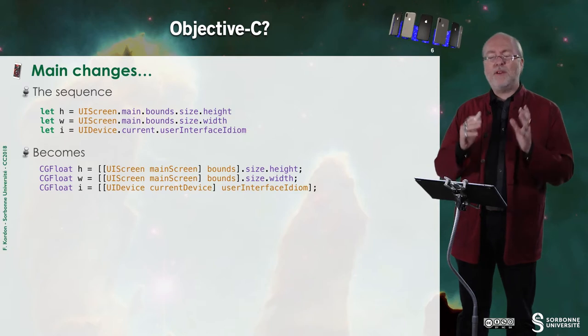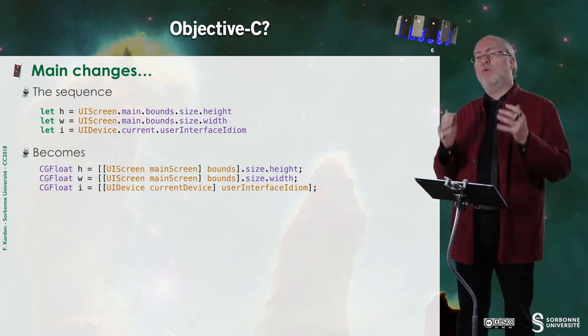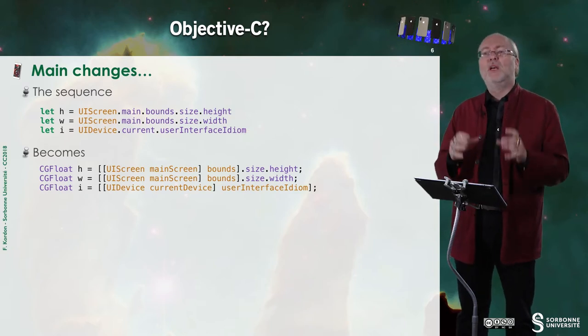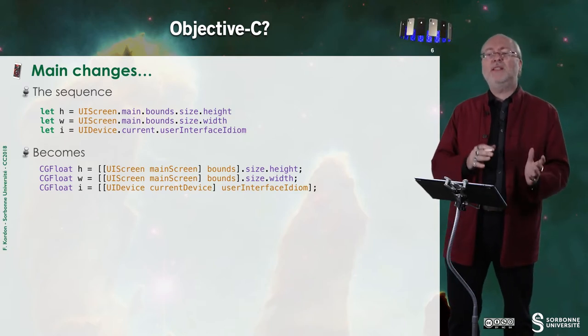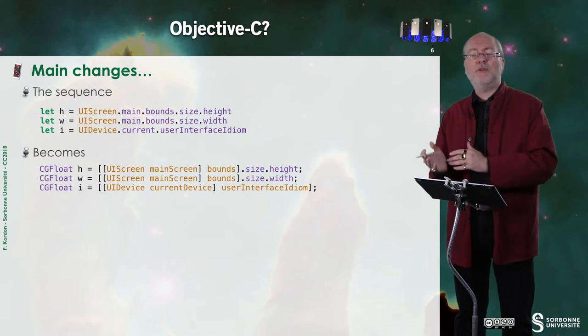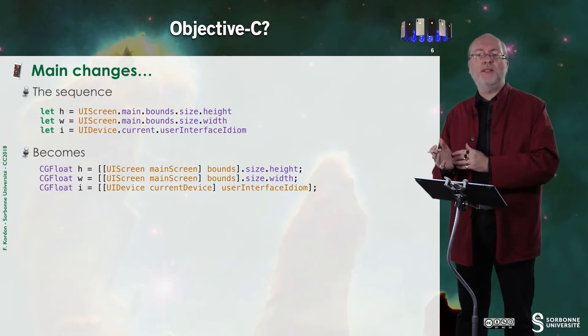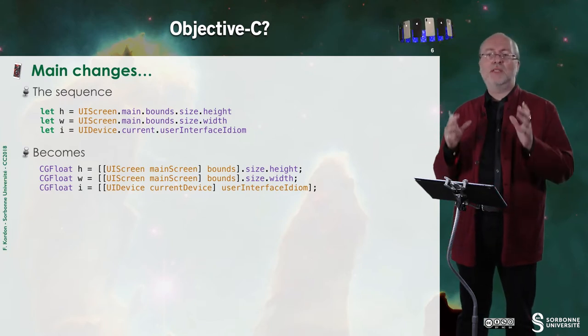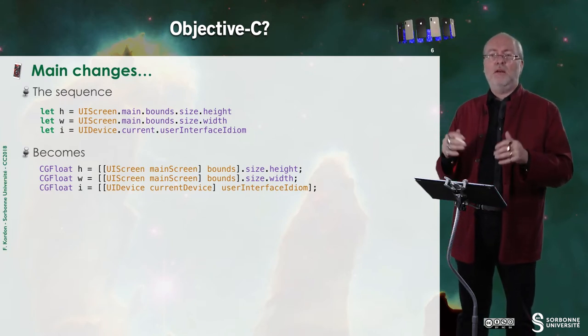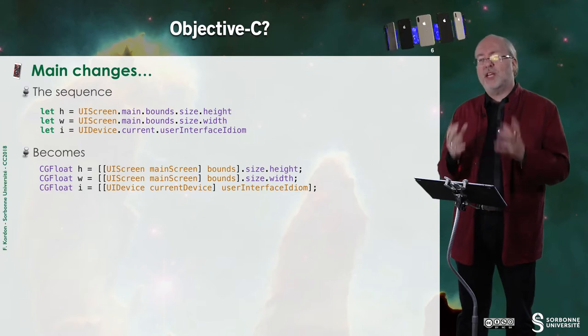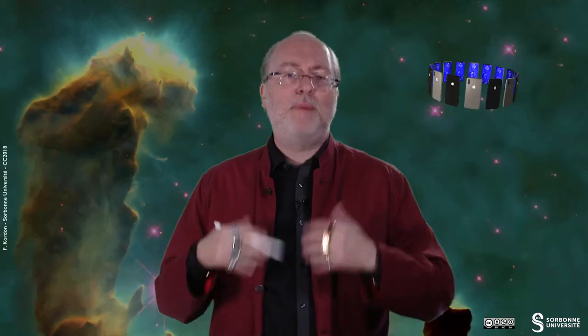Once again, it's very nice because once you see the Objective-C code, finding the equivalent Swift code is quite easy and vice versa. Despite the notation differences due to the two languages having different syntax, it's quite natural to go from one to the other.